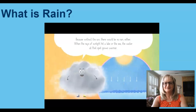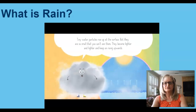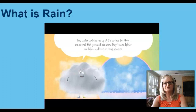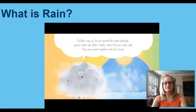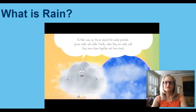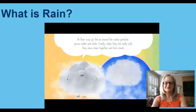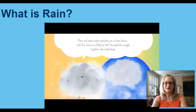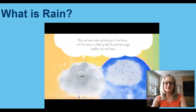When the rays of sunlight hit a lake or the sea, the water at that spot grows warmer. Tiny water particles rise up at the surface, but they are so small that you can't see them. They become lighter and lighter and keep on rising upwards. On their way up, the air around the water particles grows colder and colder. Finally, when they are really cold, they move closer together and form clouds.